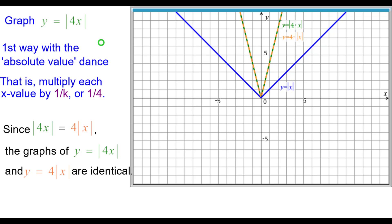We should also point out that since the absolute value of 4x is also the same as 4 absolute value of x the green and orange graphs here are identical.